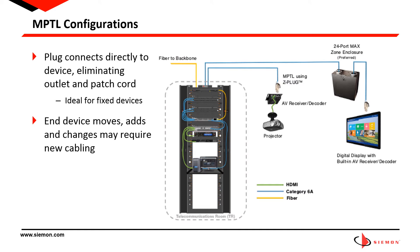A relatively new topology is the modular plug terminated link, or MPTL. In this instance, the outlet at the end device is replaced with a modular plug that connects directly to the device. This topology is limited to devices that are fixed in place, as it limits relocation or repurposing of the cabling run if any changes or relocation of the device occur. Similar to the topology shown previously, a zone enclosure can still be added to provide a greater level of flexibility, which is especially important when implementing MPTL topologies.